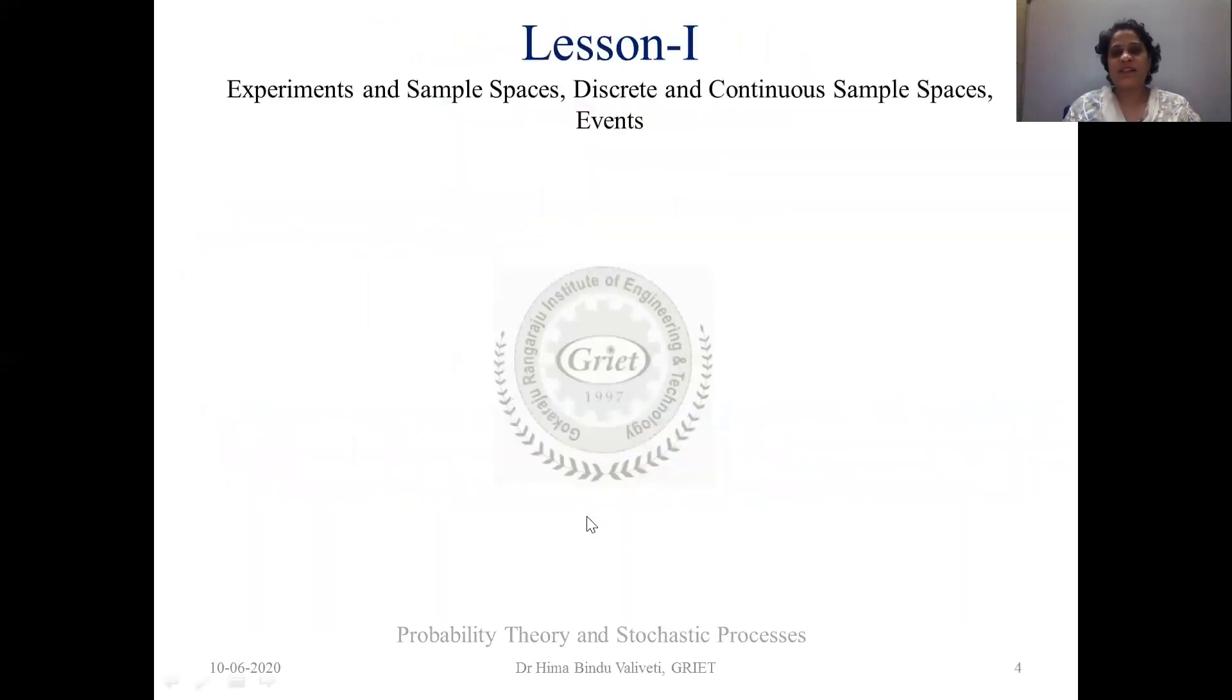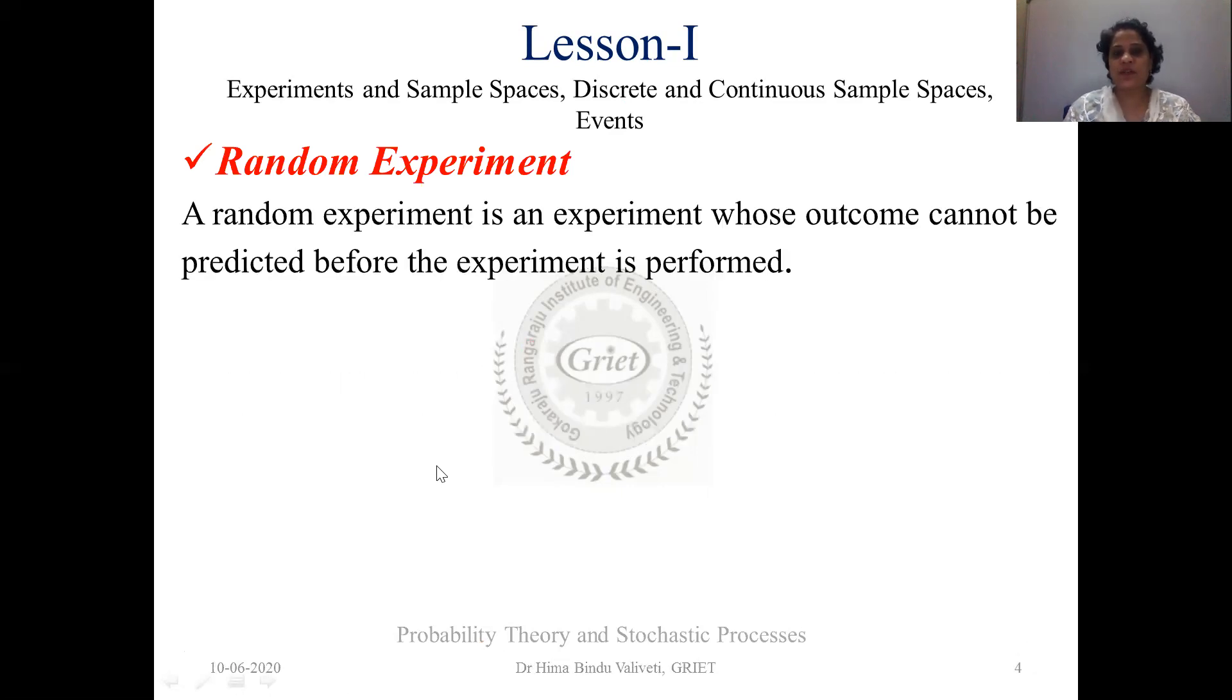These are the very basic examples, real time or the basic examples that you are given so as to understand the importance of probability. So moving on, basically, this is the first lesson we're going to talk about experiments in sample spaces, discrete and continuous sample spaces and thereafter events. Just to start with, what is a random experiment? Firstly, that is the first question that pops up. And the random experiment is an experiment whose outcome cannot be predicted before the experiment is performed.